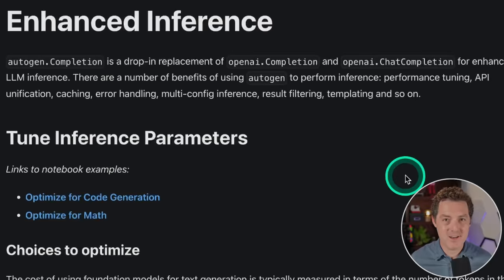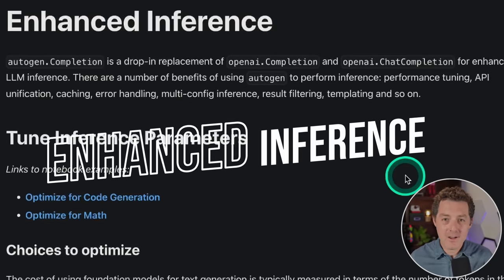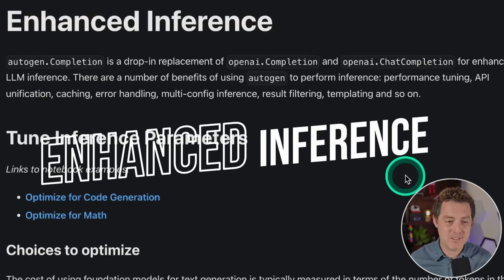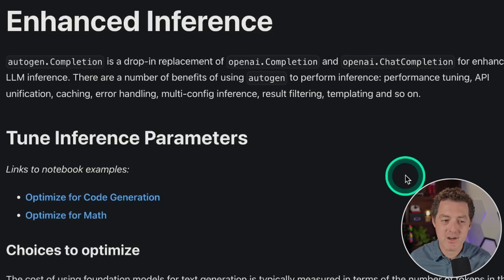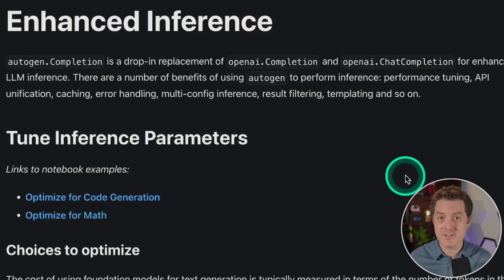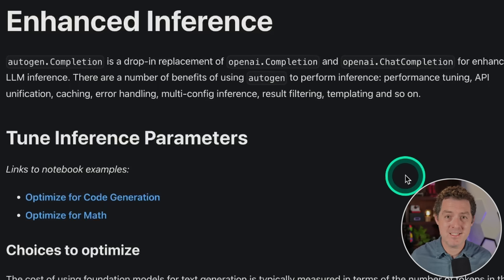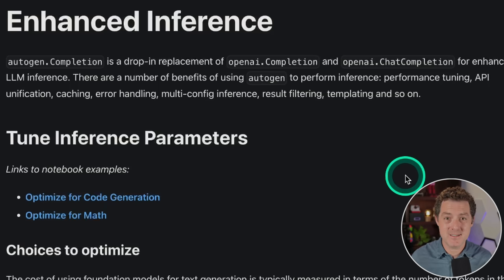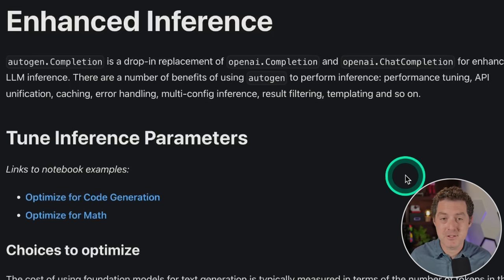Now let's talk about enhanced inference. Autogen really has two main parts: the multi-agent conversation framework, which is what it's known for, and this whole separate thing called enhanced inference. I didn't even realize how powerful enhanced inference was until I started digging into it. It truly is a major pillar of the Autogen framework.